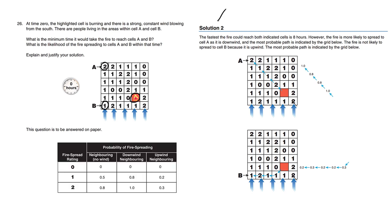Let's read the solution. The fastest the fire could reach both indicated cells is eight hours, because we have one, two, three, four jumps. Either way, one, two, three, four, and each jump is two hours, reading this from previous information.